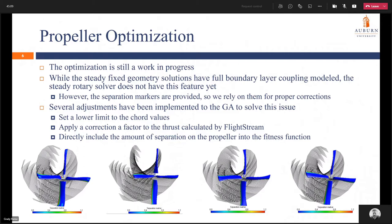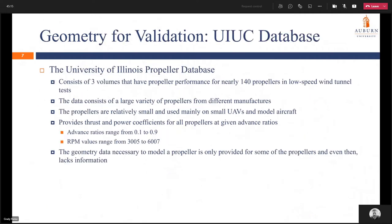This covers most of the propeller optimization, which is my master's thesis. Now I will move on to the actual validation for Flightstream. The source for these validated propellers comes from the University of Illinois propeller database. This consists of three volumes that have propeller performance for nearly 140 propellers in low speed wind tunnel tests. The data consists of a large variety of propellers from different manufacturers, and the propellers are relatively small, used mainly on small UAVs and model aircraft. The performance data provides thrust and power coefficients for all propellers at given advanced ratios, ranging from about 0.1 to 0.9, with RPM values ranging from about 3000 to 6000.